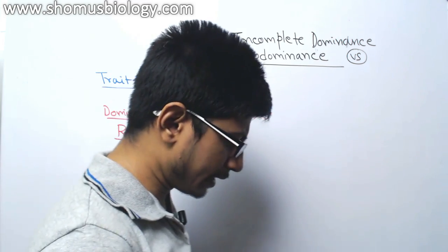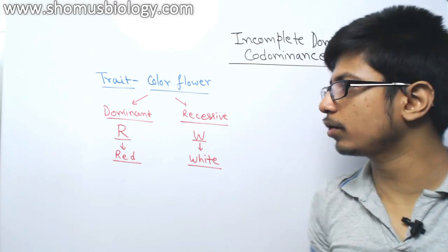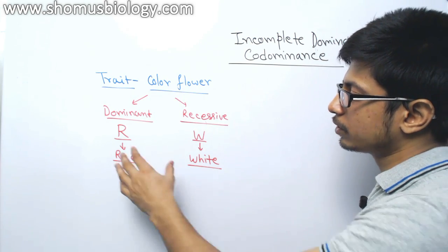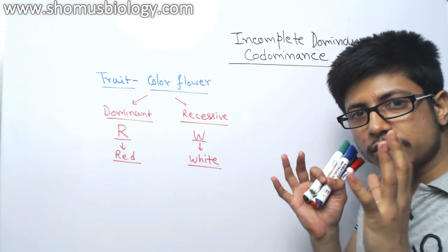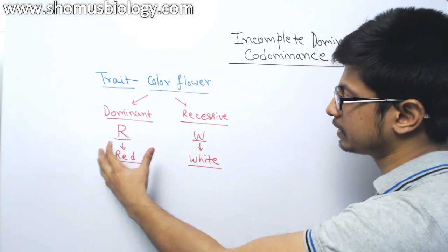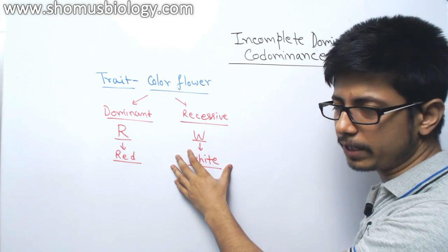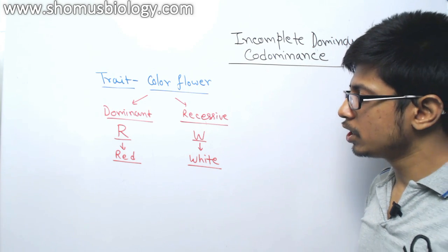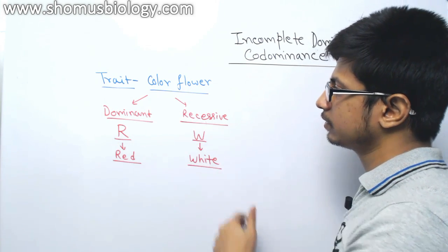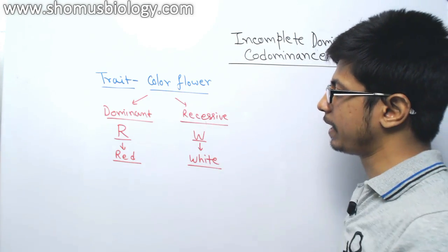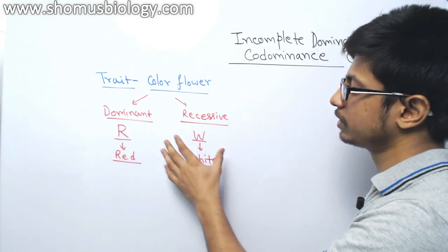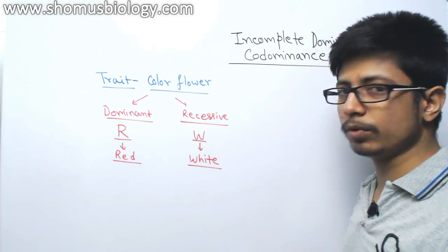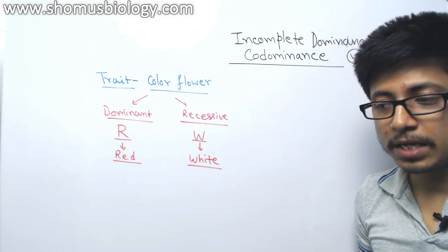So according to Gregor Mendel, what happens in a monohybrid cross like that, if you take only one trait for that cross, we know that dominant allele always shows its effect and will suppress the effect of recessive allele, right? It is always true according to the Mendelian pattern of inheritance. So if we take this plant, if we take a red plant and cross it with a white plant, according to Mendel all the offspring in F1 generation will be red.